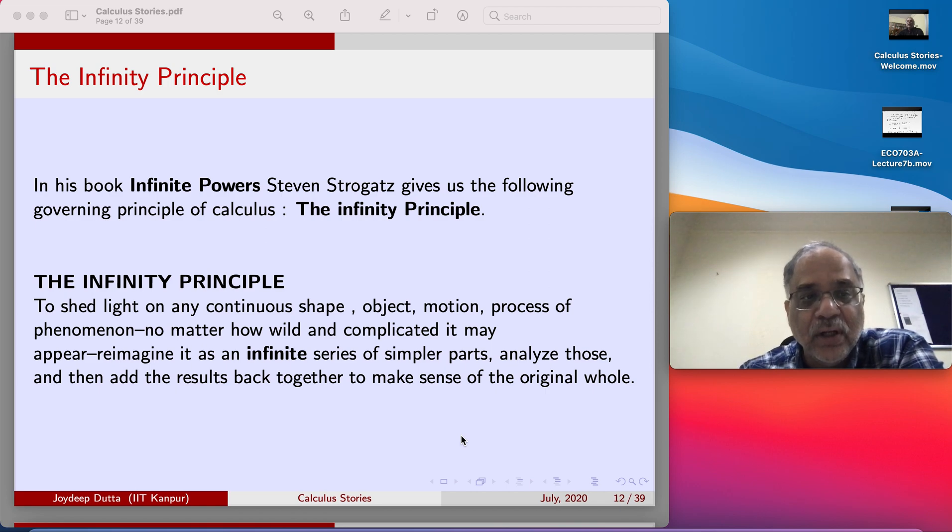To shed light on any continuous shape, object, motion, process, or phenomena, no matter how wild and complicated it may appear, reimagine it as an infinite series of smaller parts, analyze those parts, then add the result back to make sense of the original whole. But when you want to get the final result, when you have to have a view of the original whole, you have to take a limiting process, and that limiting process is an infinite limiting process.